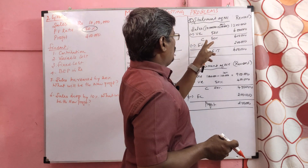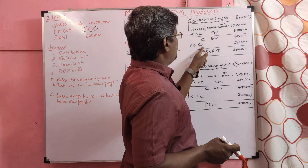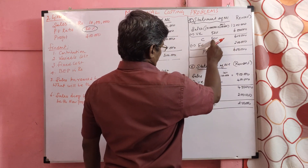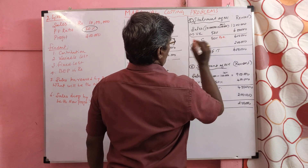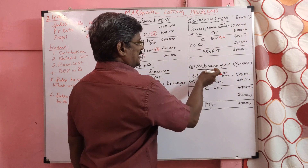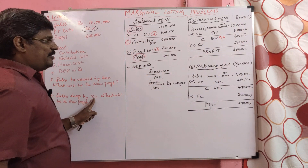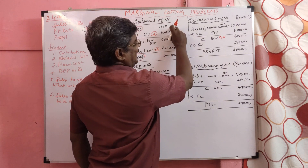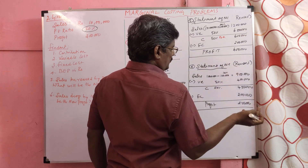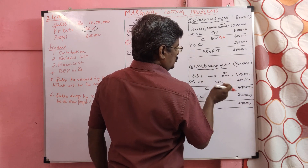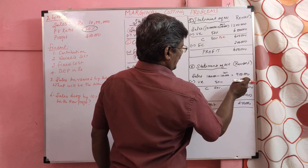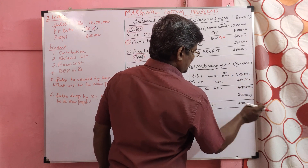Variable cost and contribution not known, but we know PVR — so apply PVR as contribution. Fixed cost remains same. Then for the sales drop scenario: sales dropped by 10%, so 1 lakh dropped, balance 9 lakh. We do not know variable cost or contribution but we know PVR. So PVR is contribution — 50% of 9 lakh equals 4 lakh 50. Balance 50% of 9 lakh equals 4 lakh 50 is variable cost. Fixed cost is known. This gives us the profit.